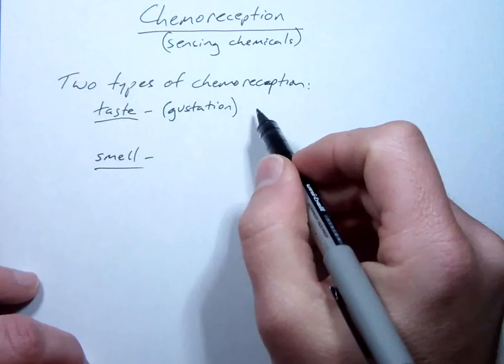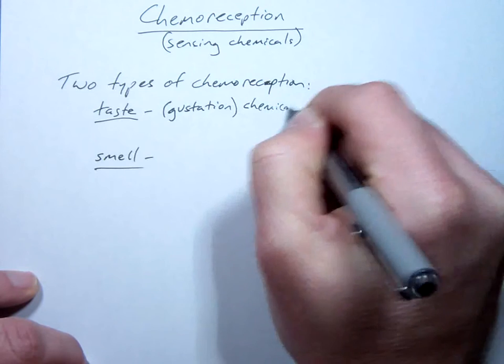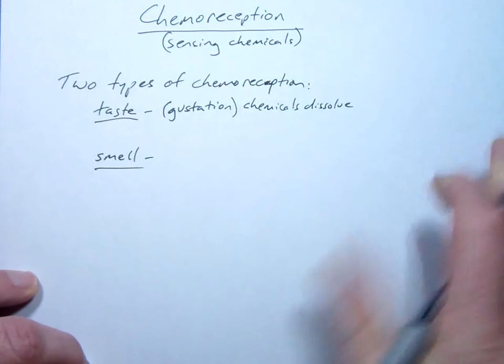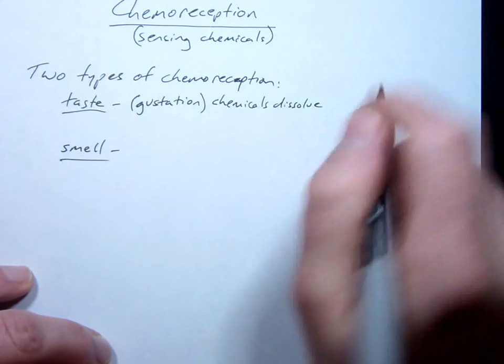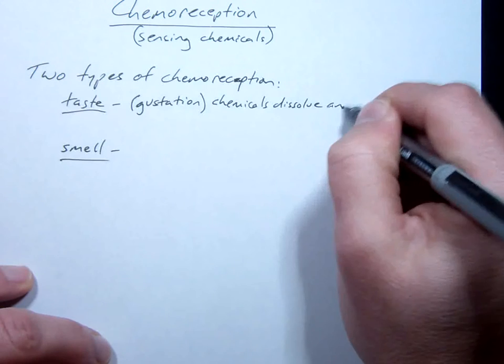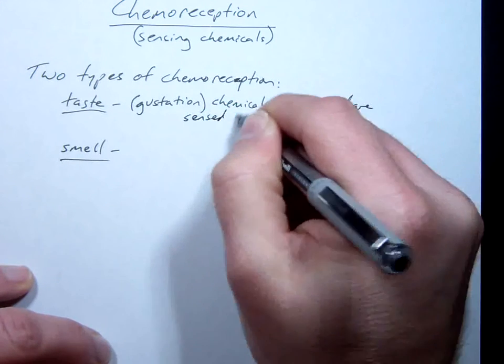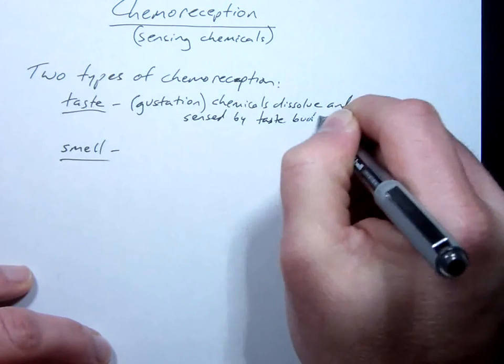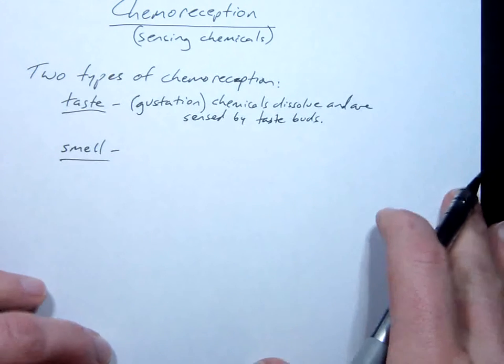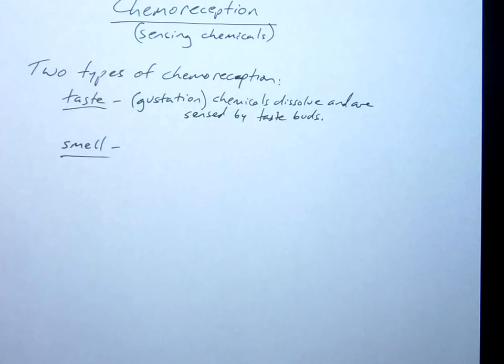So gustation. Chemicals dissolve and are sensed by taste buds. Taste buds in and of themselves are not neurons, but they're attached to neurons. If taste buds were neurons, that would be bad because the mouth is not a great environment for something as sensitive as a nerve. There's enzymes, acids, really hot and really cold. Taste buds get replaced really quickly.